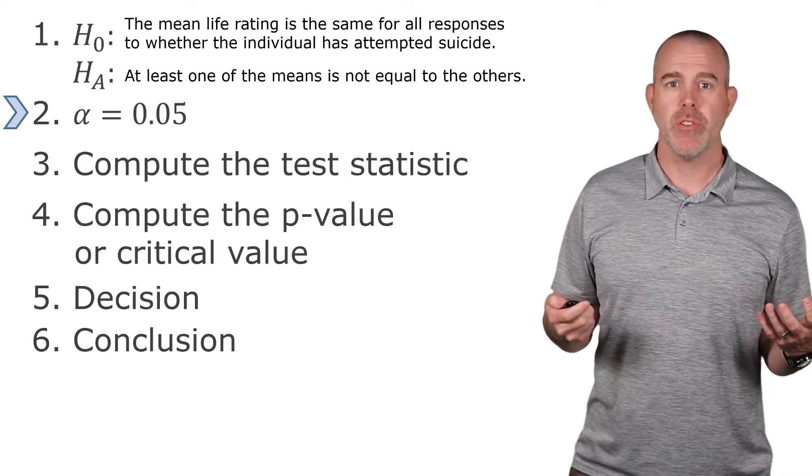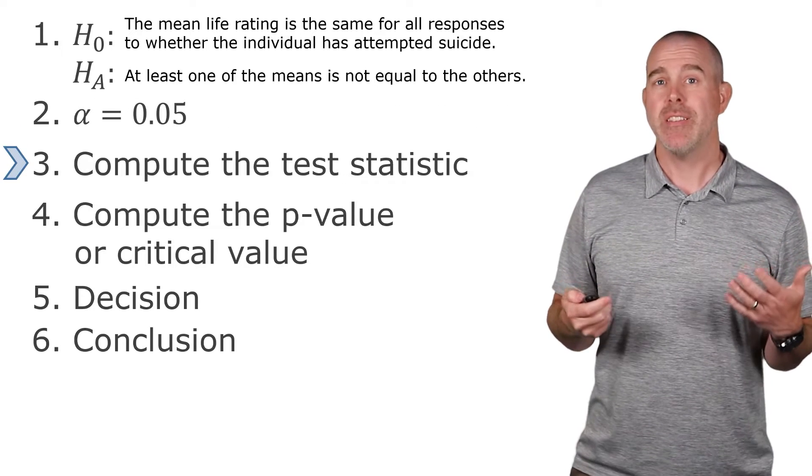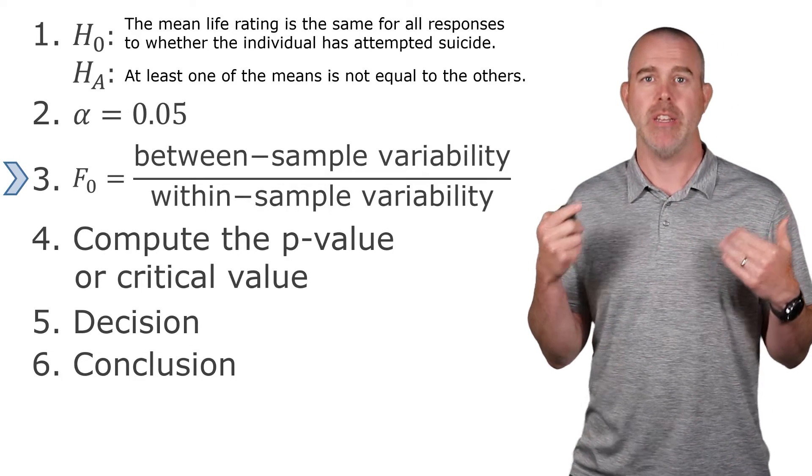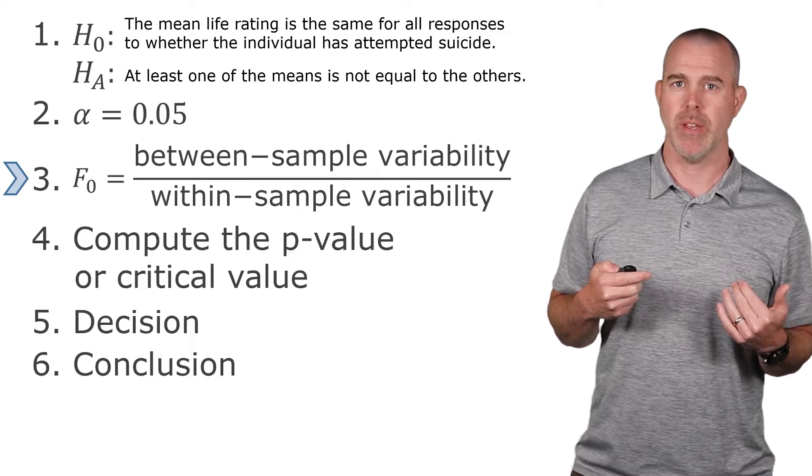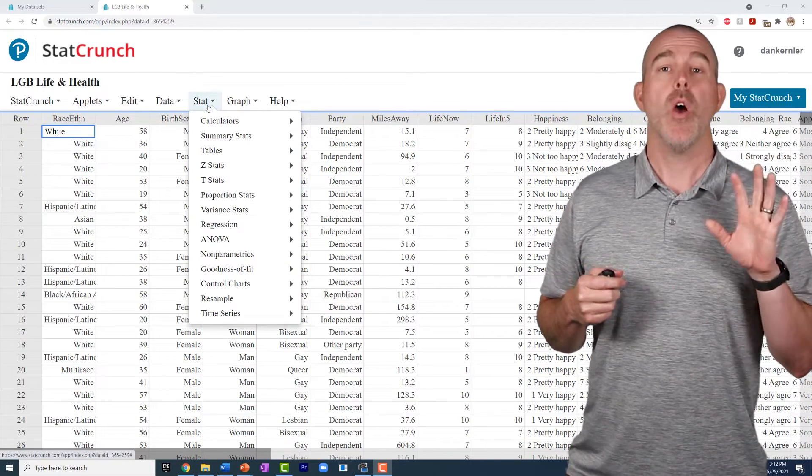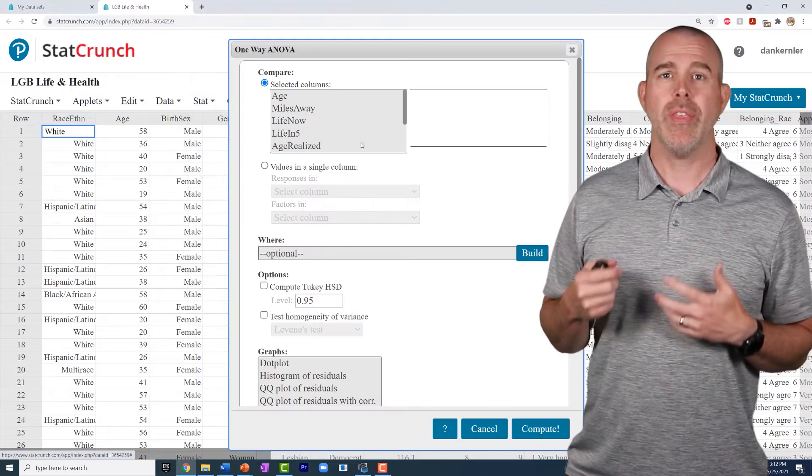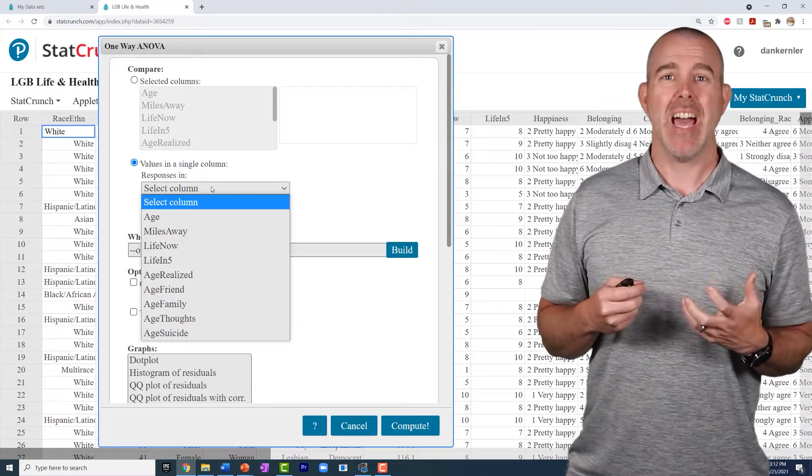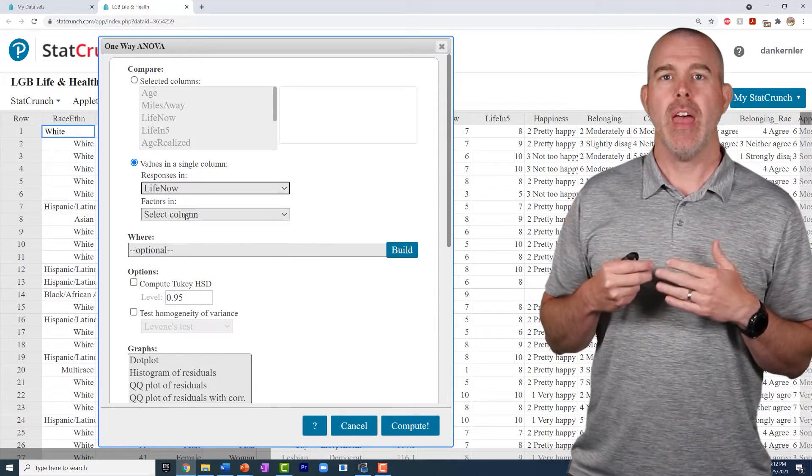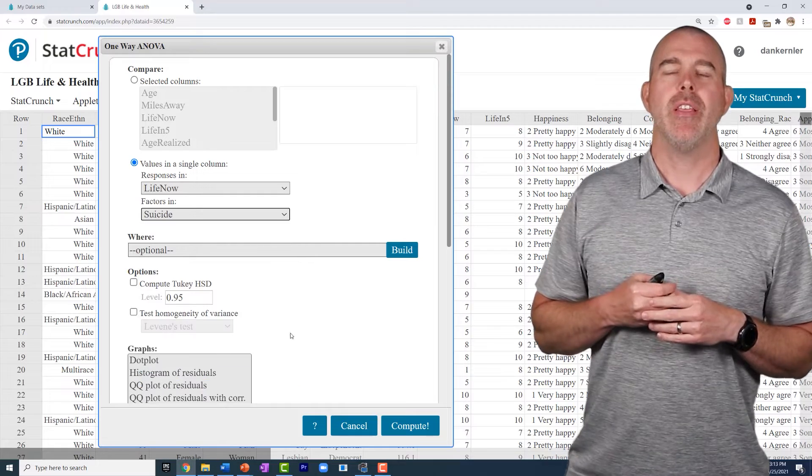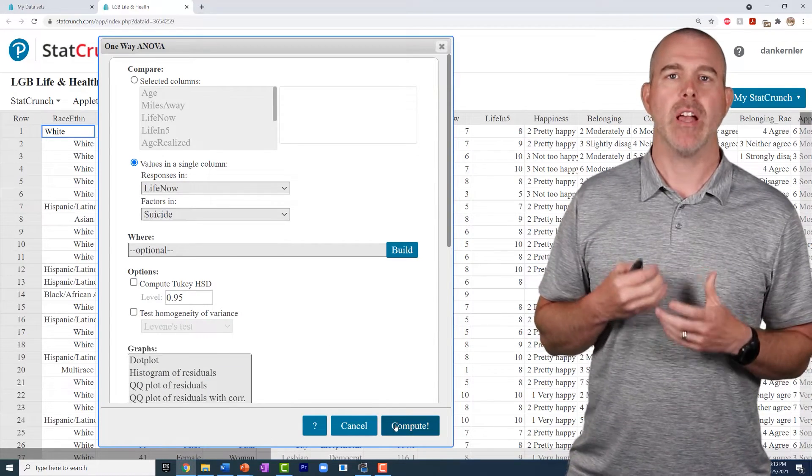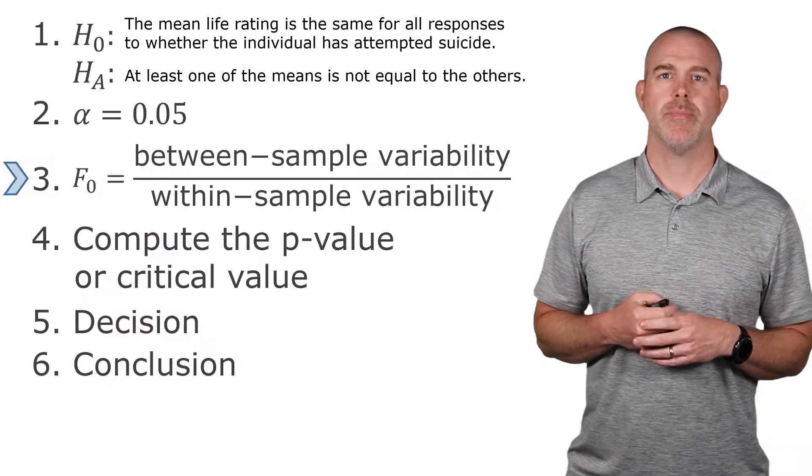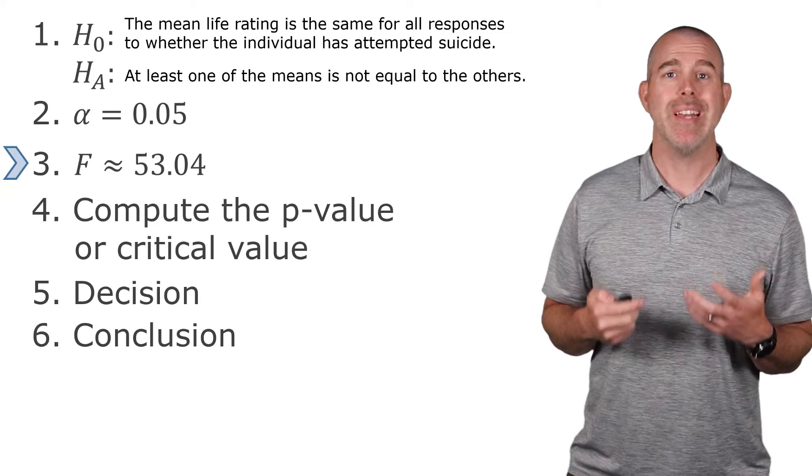Our alpha, we use 0.05. The test statistic, we're going to use StatCrunch to find this F between sample variability divided by the within sample variability. So in StatCrunch, this is stat one-way ANOVA with data, and we're looking where all our variables are actually in the same column, it's the life now, and then the groupings are in the suicide column. And then we just hit compute, and that gets our F statistic of 53.04.